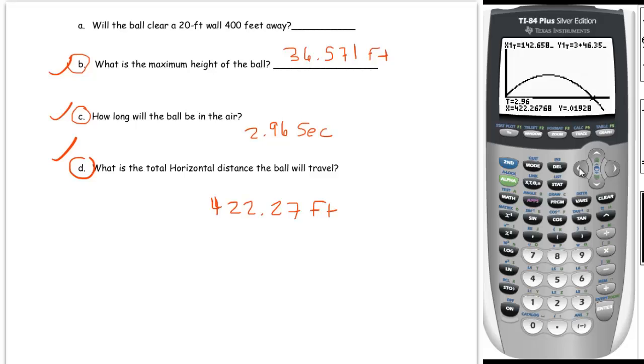And then this first question: will the ball clear a 20-foot wall 400 feet away? Well, in order to answer that we have to know how high is this ball when we're 400 feet away. So I'm going to move the cursor until I see the x value being 400 or roughly 400. It's 400 roughly at 2.81 seconds and the y coordinate is 6.91. So when it's 400 feet away it has a height of 6.91 feet, and certainly that wouldn't be high enough to reach over the wall. So the answer is no, it falls short.